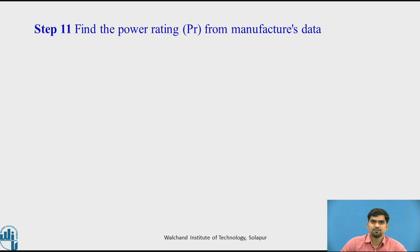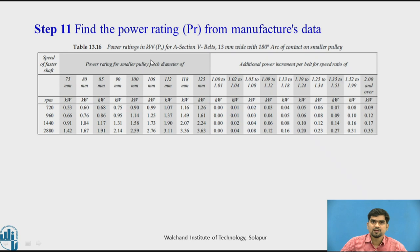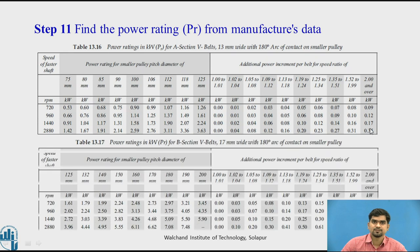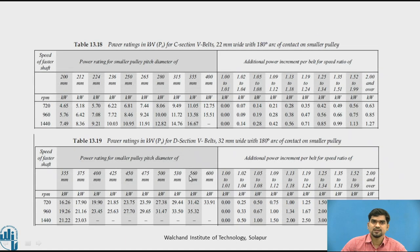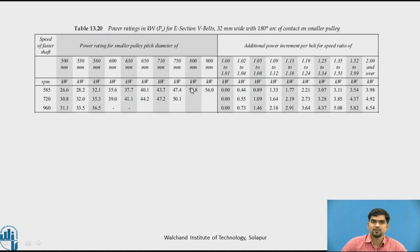Step 11: Find the power rating Pr from the manufacturing data. For an A-section belt, if the smaller pulley diameter is 118 mm at 1440 RPM, Pr is 2.07. We also check the speed ratio — if it is 2 or above, we add an additional 0.17 to get the final Pr. Similar tables exist for B, C, D, and E section belts.